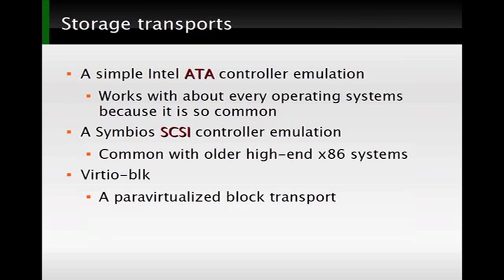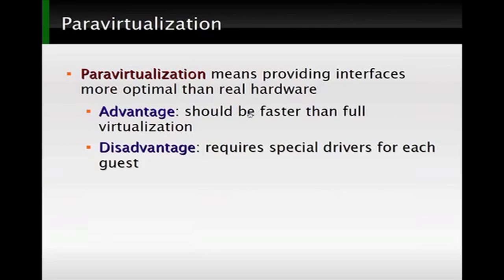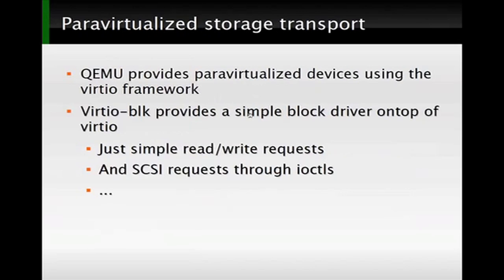And we've got VirtIO block, which is a para-virtualized block driver — that is, one that isn't actually meant for real hardware. Para-virtualization is a generic term. It means we provide interfaces to our virtual machines that do not actually look exactly like real hardware, but they're, at least in theory, more optimal. It should allow faster access and simpler interfaces. But the downside is that we actually require specific support for our virtualization solution in every guest, because we do not provide a common piece of hardware that's already supported. So in our specific case, this basically means we have to have one driver for every supported guest just for QEMU.